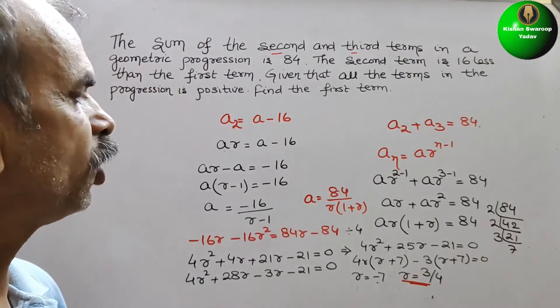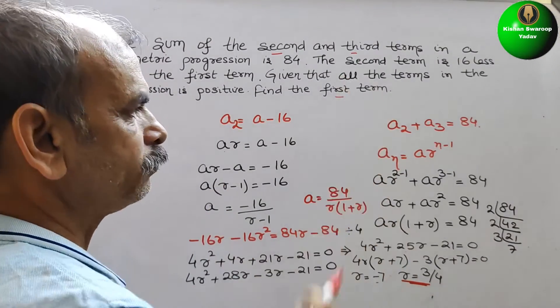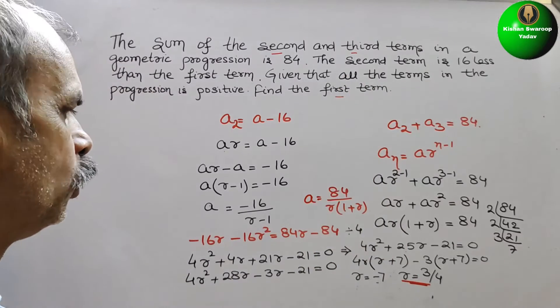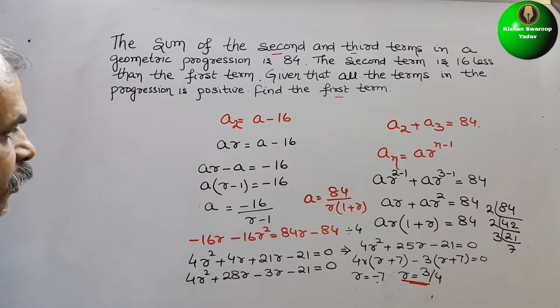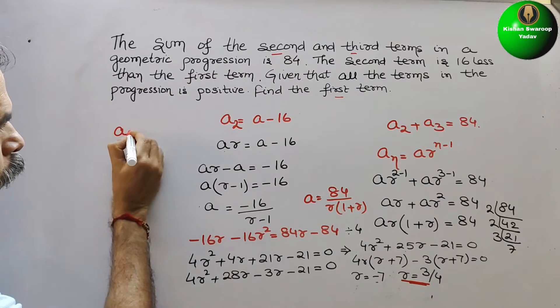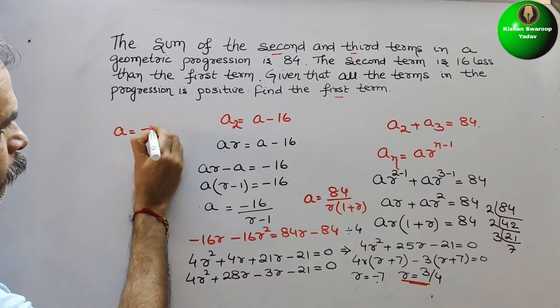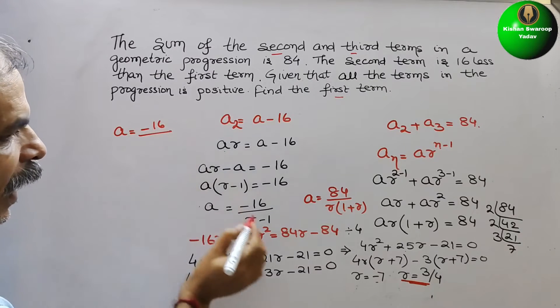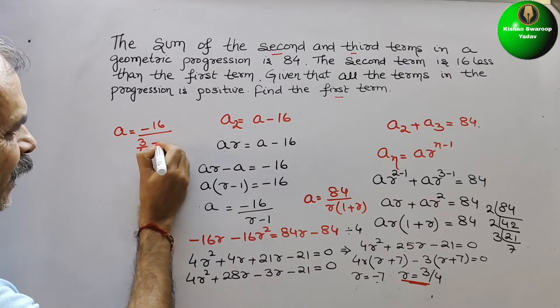So what is your a? They have told to find out the first term. How? So we can say here, a is equal to minus 16 by r is 3 by 4 minus 1.